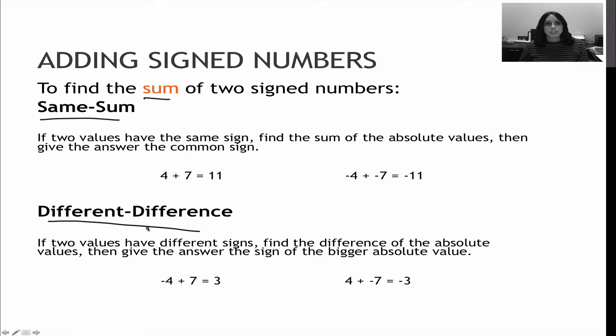If they are different signs, so if it's an addition problem but the two signs are different, negative 4, positive 7, I'm going to find the difference between 4 and 7. The difference between 4 and 7 is 3. My bigger number has a positive sign, and therefore my answer here is positive. Whereas over here, I have 4 and negative 7. The difference between 4 and 7 is 3, and I look at the bigger number has a negative sign, so my answer is negative.